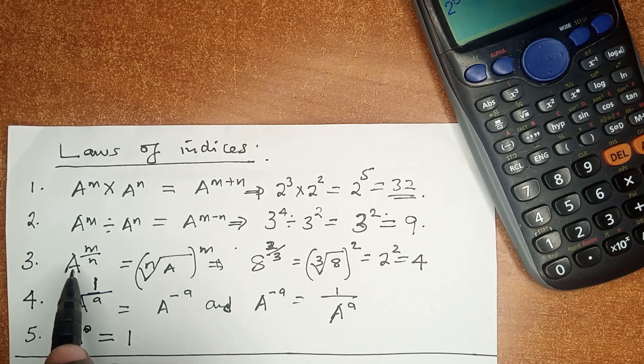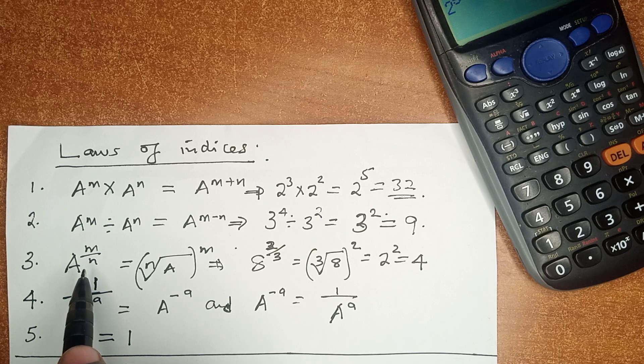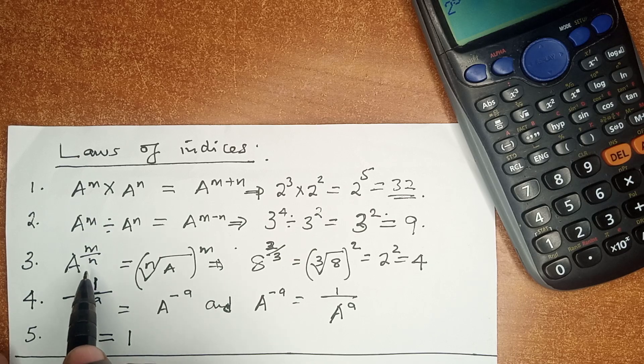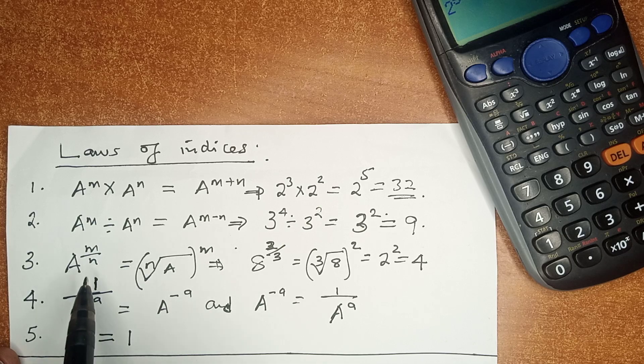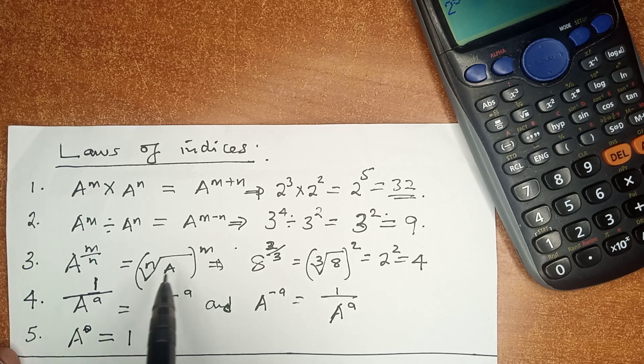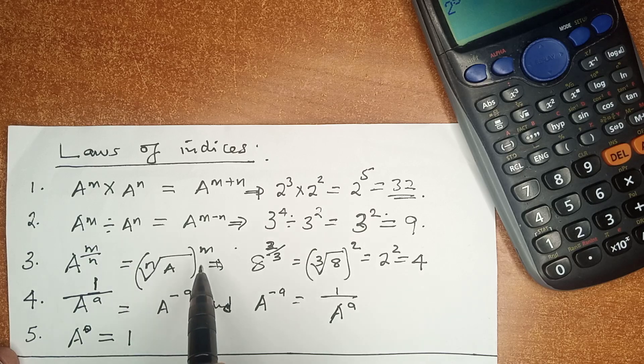Law number 3: if a is raised to power m over n, meaning that the index is a fraction, then the denominator which is n, we go for the nth root of a, after which we raise it to the numerator, meaning m.